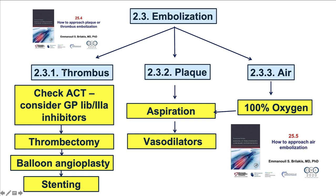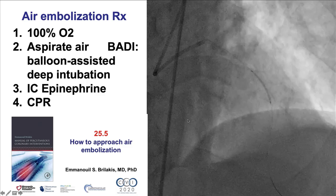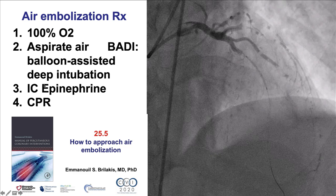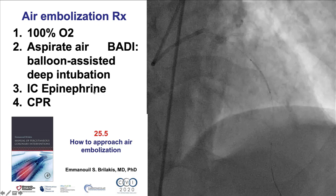If thrombus is the problem, then thrombectomy is performed, followed by balloon angioplasty and stenting. If plaque is embolized, aspiration is done with vasodilators. If air embolization is the problem, oxygen is given, and if needed, aspiration can be done and vasodilators can be given as well. Also in cases of cardiac arrest post-embolization, intracoronary epinephrine may actually help restart the heart.